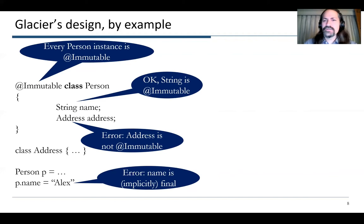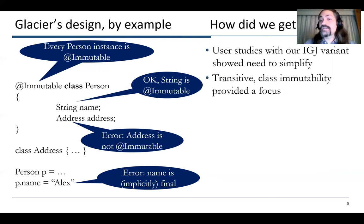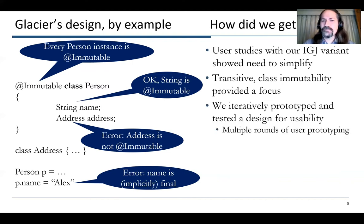The fields of the data structure are checked. String is okay because that's immutable, but perhaps we forgot to put an immutable annotation on Address, and then we get an error from that, because again we're checking transitive immutability. So it's a fairly simple system, not too hard to understand. User studies with our variant of Immutable Generic Java really showed the need to simplify if we were going to make a system that was easy to teach and easy to use.